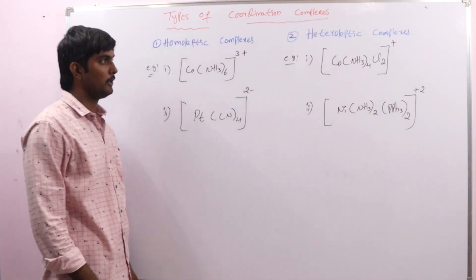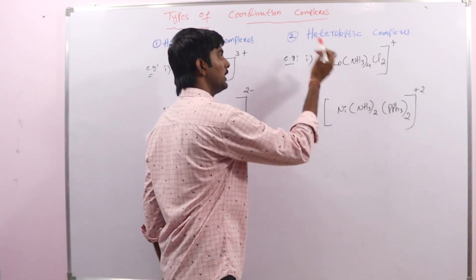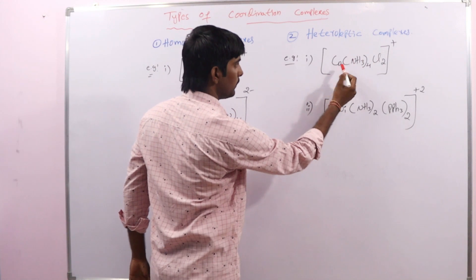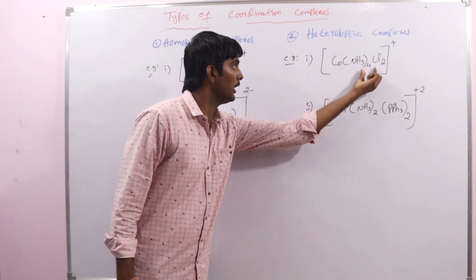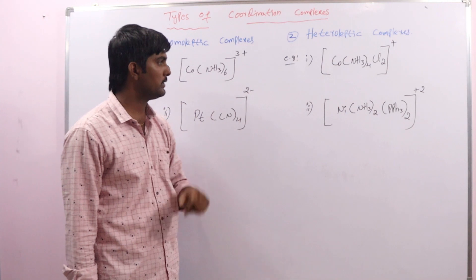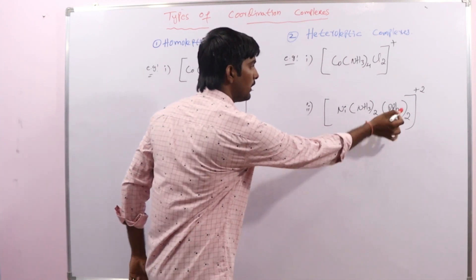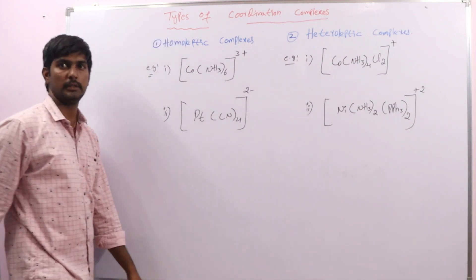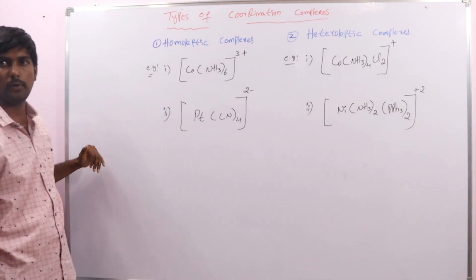Heteroleptic complexes are those in which more than one type of ligand is bonded to the central metal atom or ion. For example, cobalt bonded to both chlorine and amine ligands — two different types of ligands — making it heteroleptic. Another example has both amine and triphenylphosphine ligands bonded to the central metal atom. So, homoleptic means one type of ligand, and heteroleptic means more than one type of ligand.